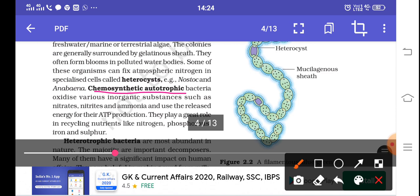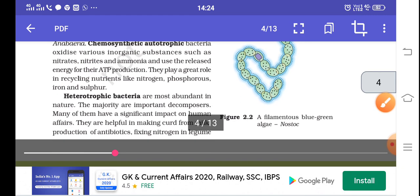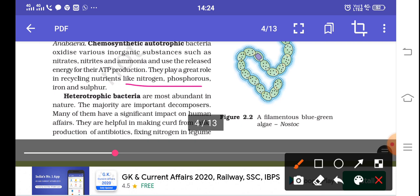Their mode of nutrition is autotrophic, meaning chemosynthetic autotrophic bacteria. They use inorganic substances like nitrates, nitrites, and ammonia to make their own food. They can produce ATP using nitrates, nitrites, and ammonia, and they play a very important role in recycling nitrogen, phosphorus, iron, and sulfur. So they have dual work here.